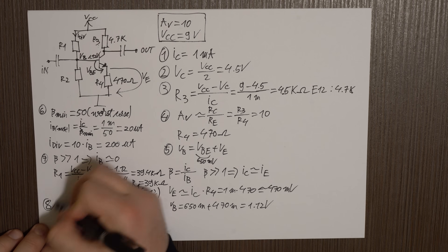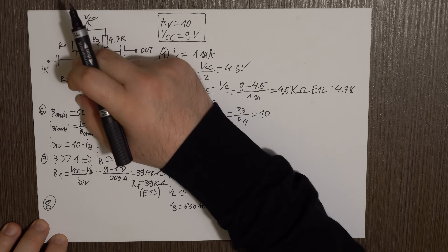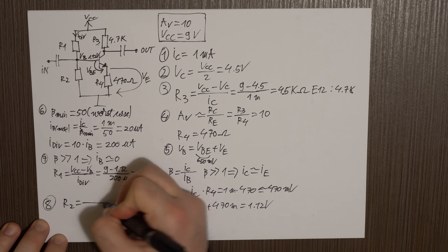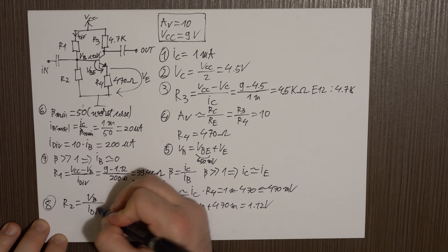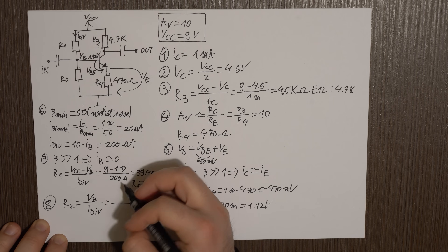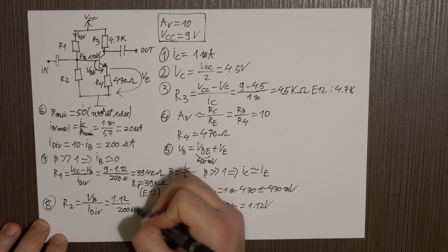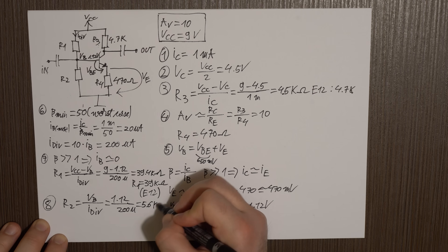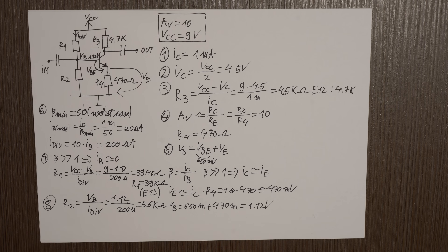Finally, the last step — step number 8 — is calculating R2. The voltage drop across R2 is VB, and the current through R2 is the divider current I_div. So R2 = 1.12 V / 200 µA = 5.6 kΩ, which conveniently is already in the E12 series. And that's it with the design process.